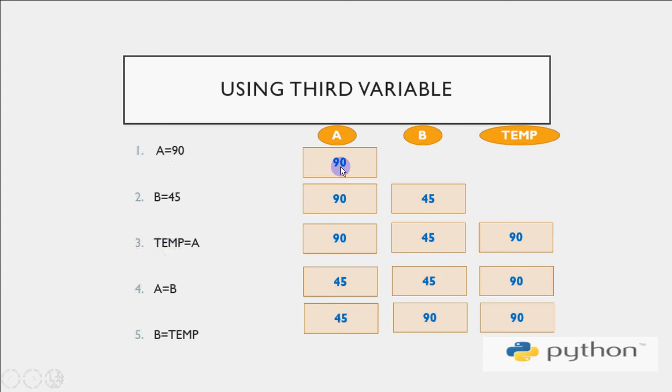So for that we need some extra variable which will hold the value for the time being. So we use a variable here called temp. What we do is initially your A is 90, B is 45. When temp comes to the memory, A goes to temp. So the value of A which was 90 goes to temp. So temp also becomes 90. Now your A is preserved.